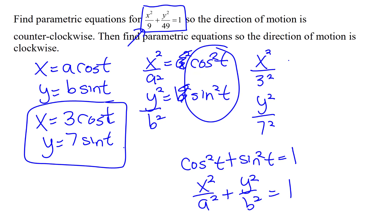But which way is it going to go? We want to do one that's counterclockwise and one that's clockwise. So let's plot this. Let's start when t equals 0. I'd have 3 cosine of 0, which is 3, and 7 sine of 0, which is 0. So 3 and 0 is where this starts.